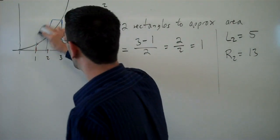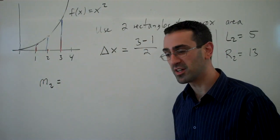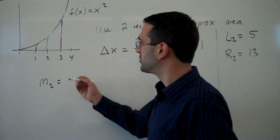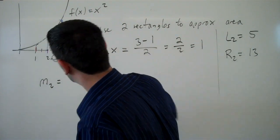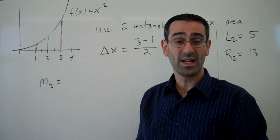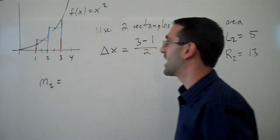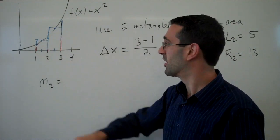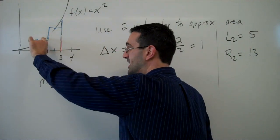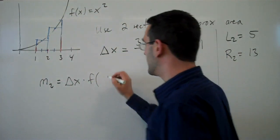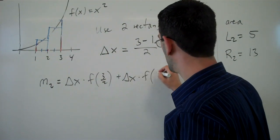Another option would be to do a midpoint approximation with two subdivisions. If we do a midpoint approximation, then on each interval we're going to use as the height of the rectangle the function value at the midpoint of each interval. So on the interval 1 to 2, we'd evaluate the function at 1 and a half, and use the function value there as the height of my rectangle. Likewise on the next interval. You'll notice that this is going to balance out the over and under estimates a little bit more. My delta x is still the width of the rectangle; the height is the function value at 1.5 (or 3 halves) for the first rectangle, and the function value at 2.5 (or 5 halves) for the second.